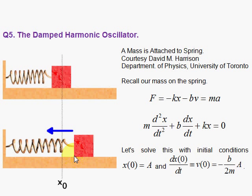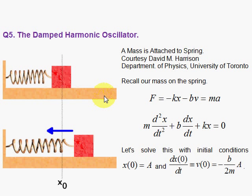Dr. Fizz, Theoretical Physics. We're going to solve the Damped Harmonic Oscillator with a specific set of initial conditions, and we're going to use the Laplace Transform technique. The Harmonic Oscillator is widespread in physics, and we're going to look at the prototype Harmonic Oscillator problem that's looked at in introductory physics classes, and that's the Ideal Spring.